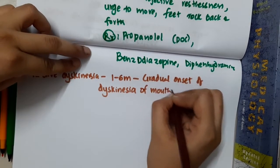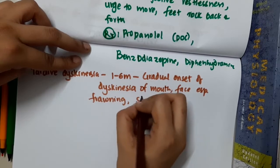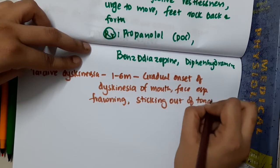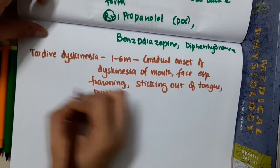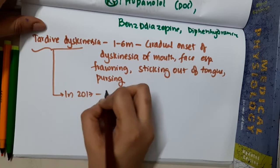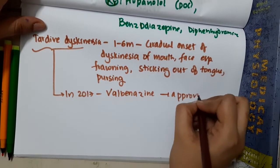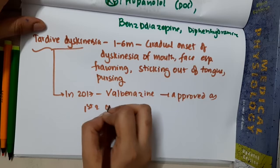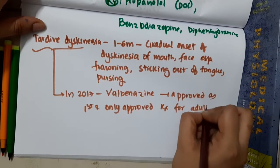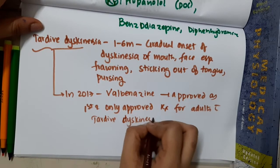Tardive dyskinesia presents with gradual onset dyskinesia of the mouth and face — frowning, sticking out or pursing the tongue. In 2017, valbenazine was approved as the first and only approved treatment for adults with tardive dyskinesia.